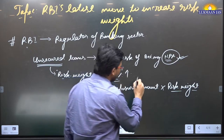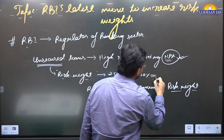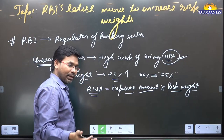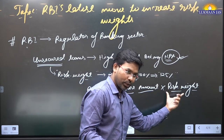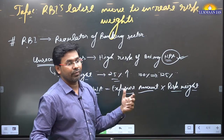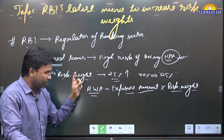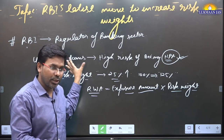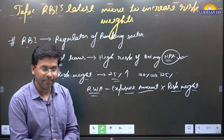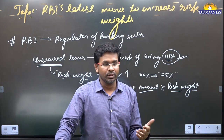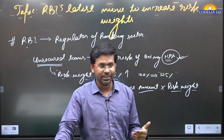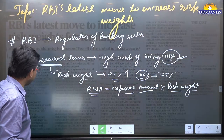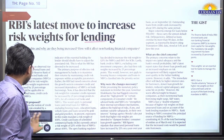Earlier the risk weight for unsecured loans was 100%, now it has been increased to 125%. This means the RBI is discouraging banks from extending more loans in the unsecured category. However, the RBI has kept the risk weight at 100% for priority sector lending by non-banking financial companies. This concept is fundamentally related to the economy and banking domain.